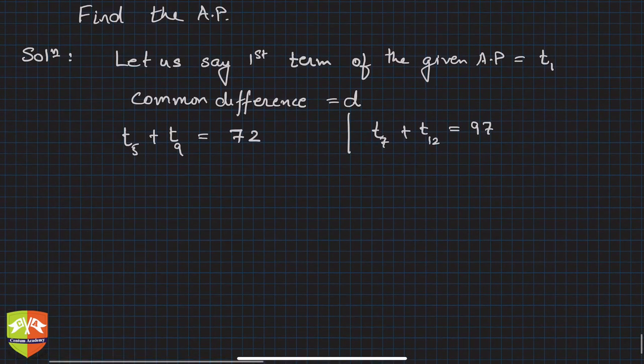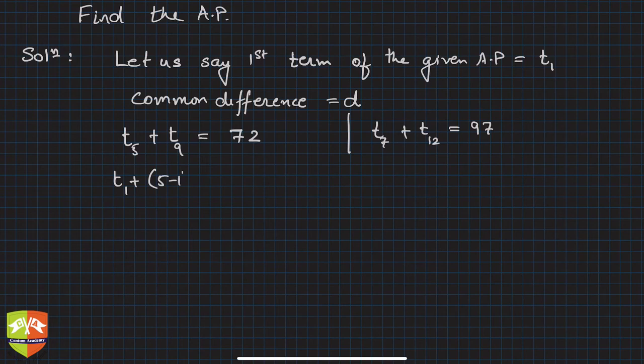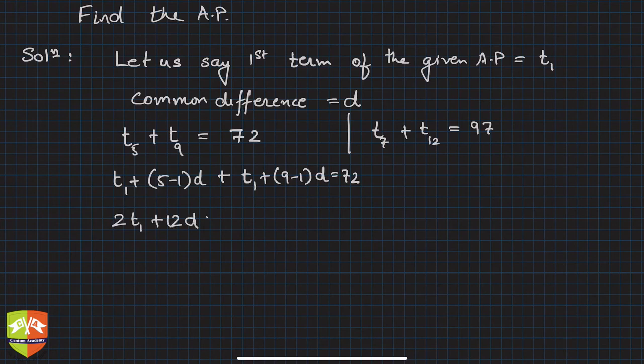Let's try and find out what is t5. t5 is t1 plus n minus 1, that is 5 minus 1 times d, and t9 is t1 plus 9 minus 1 times d, and this is equal to 72. So simplifying you will say 2t1 and this is 4d and 8d, so 12d is 72.